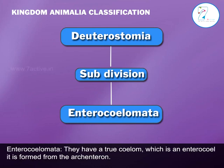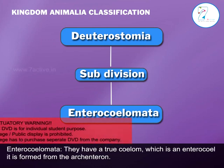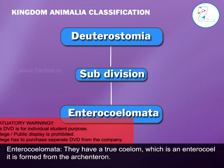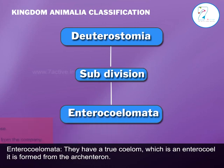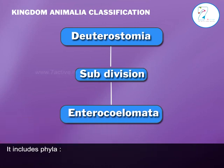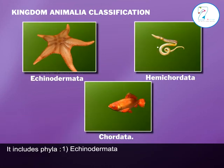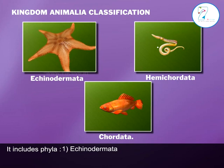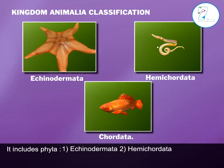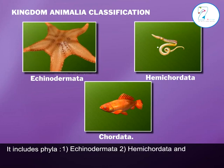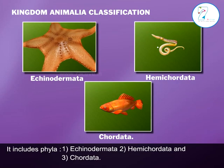Enterocoelomata: They have a true coelom, which is an enterocoelom. It is formed from the archenteron. It includes phyla: 1. Echinodermata, 2. Hemichordata, and 3. Chordata.